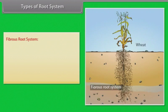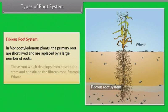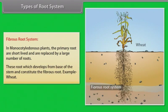Fibrous root system: in monocotyledonous plants, the primary roots are short-lived and are replaced by a large number of roots. These roots, which develop from the base of the stem, constitute the fibrous root. Example: wheat.